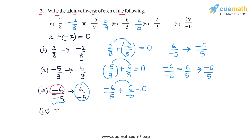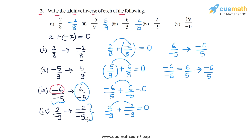In part four, the number is 2/-9. To take the negative, we invert the sign of the numerator, giving -2/-9. We can check: 2/-9 plus -2/-9 — the numerators will add to zero, so we get zero. We can simplify -2/-9 by cancelling the negative signs from both numerator and denominator, writing it as 2/9. So the additive inverse of 2/-9 is 2/9.